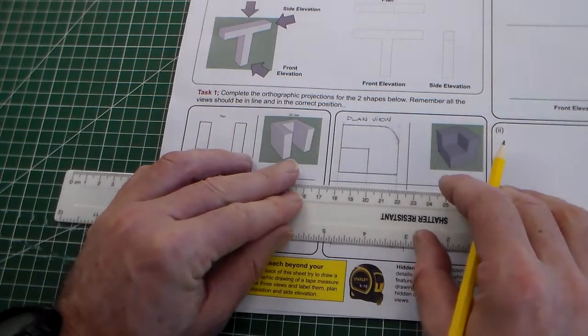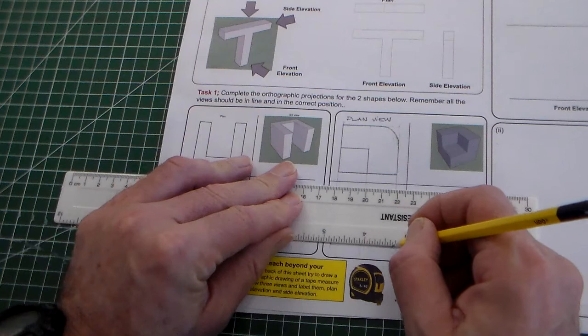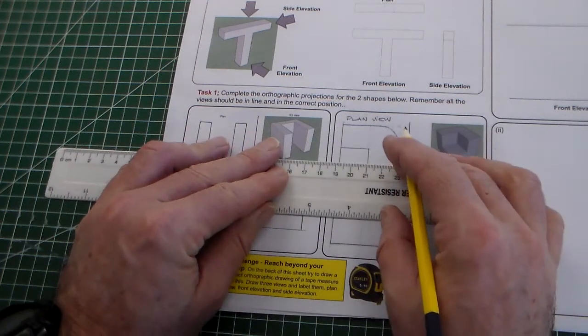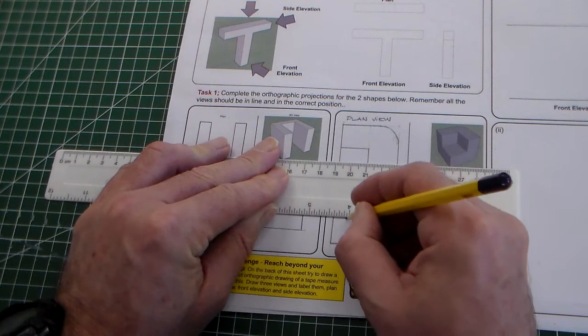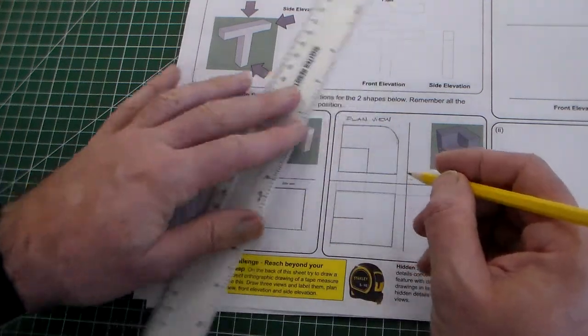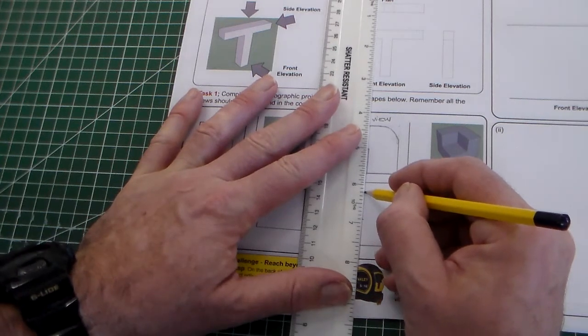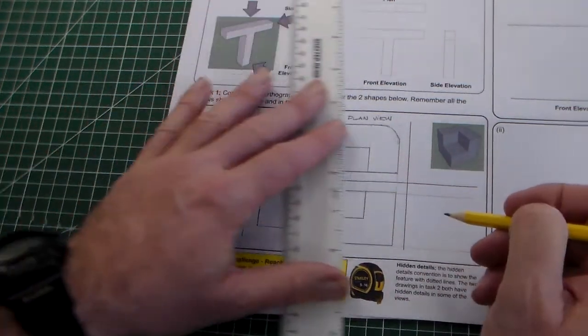Unlike the isometric views, we don't add any shading to orthographic drawings. And there's a cutout of that shape.